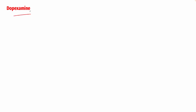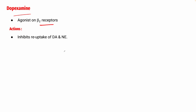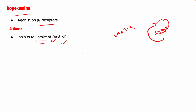The next drug is dopexamine. These drugs are classified as directly acting, indirectly acting, or mixed acting sympathomimetic drugs. Dopexamine is an agonist on beta-2 receptors. It also inhibits the reuptake of dopamine and noradrenaline — similar to how VMAT2 transports noradrenaline to storage vesicles; dopexamine inhibits that reuptake process for both dopamine and noradrenaline.